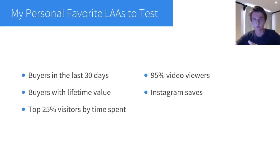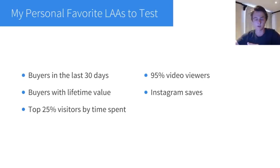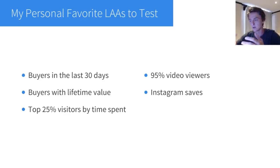In my experience, view-content lookalikes don't work that well, but if you use top 25% of visitors by time spent as your seed, you'll get a much more targeted custom audience and the resulting lookalike will perform a lot better. Another strong option is 95% video viewers — it's easy to get enough video views to build this audience, so it's one of the first lookalikes you should test. Lastly, Instagram saves work really well, especially if you're doing influencer marketing on Instagram.